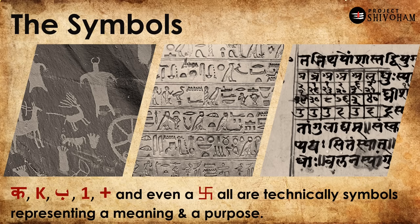If we go deep down — say the Hindi letter Ka, or the English alphabet K, or an Urdu alphabet Be, or a number, a plus sign, or even swastika — technically all are symbols, representing a meaning and a purpose. Even our alphabets are symbols; it's just that we have risen to a level of consciousness where we identify an alphabet with a sound, calling it an alphabet and not as a symbol.